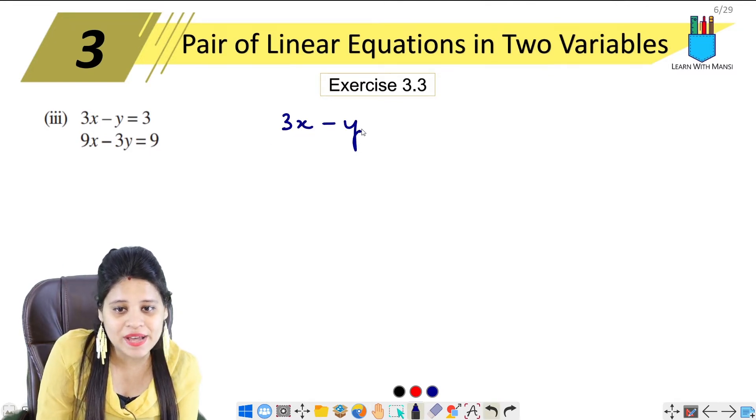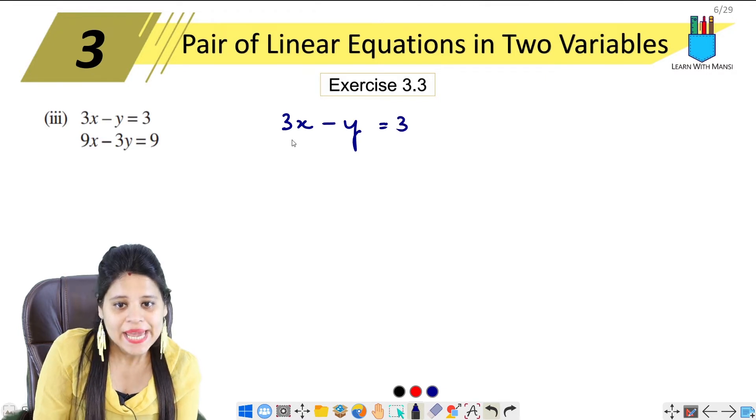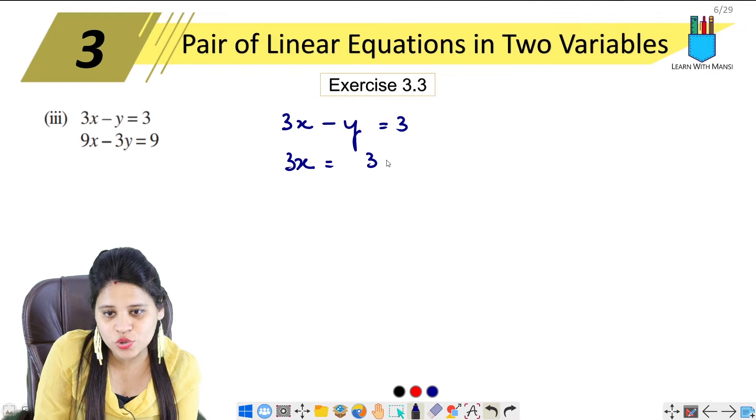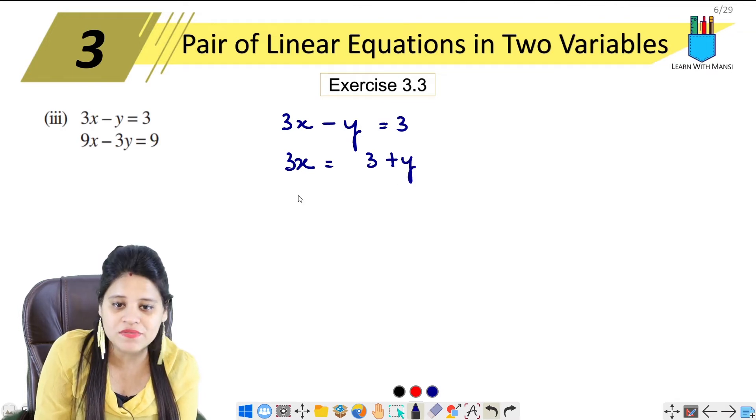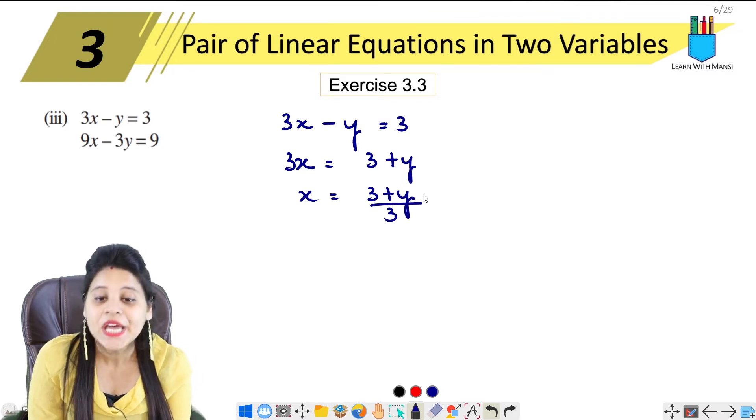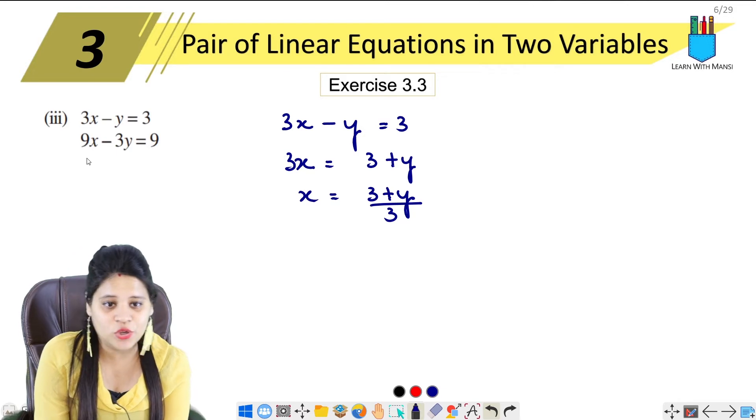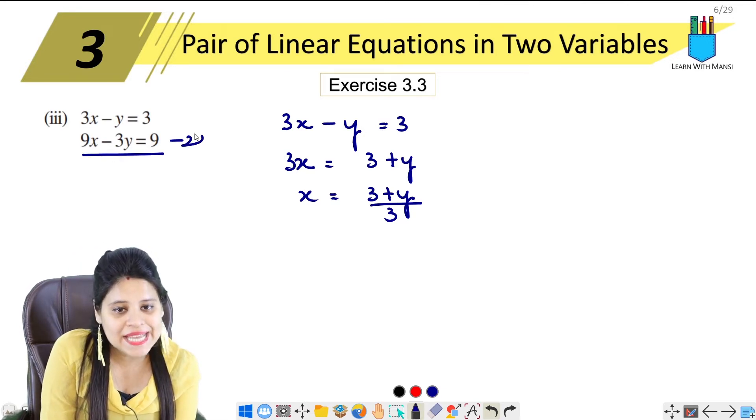3x minus y equals 3. The value of x: 3x equals 3 plus y. Minus y equals 3 plus y will be plus y, and x will be 3 plus y upon 3. So this is my x value which I have to put in the second equation.